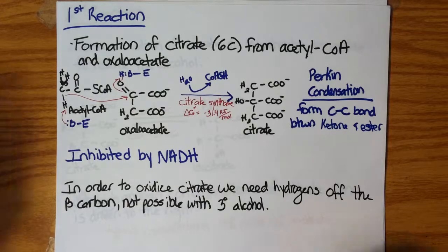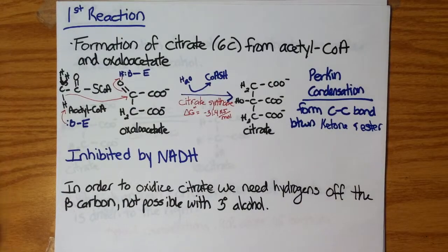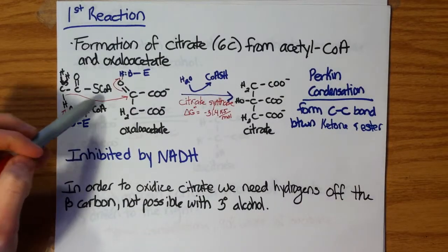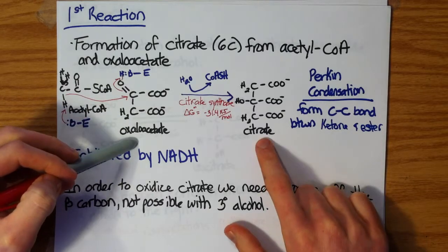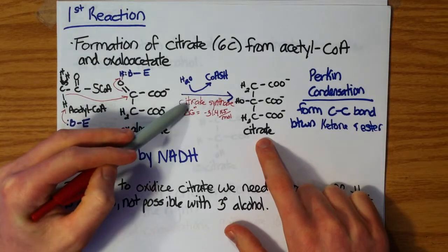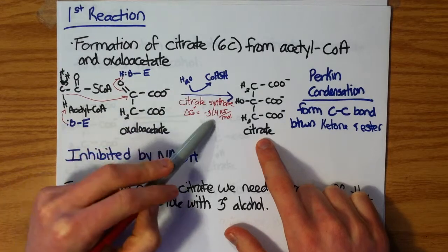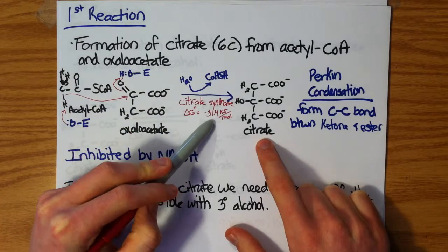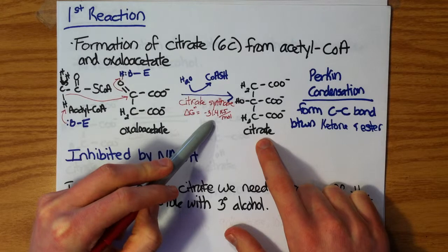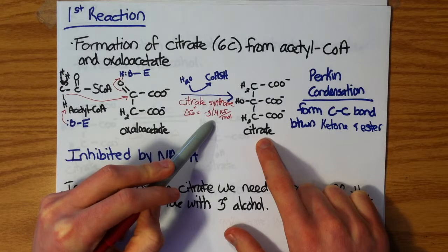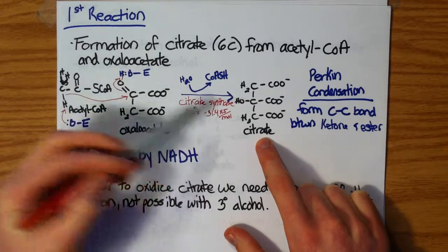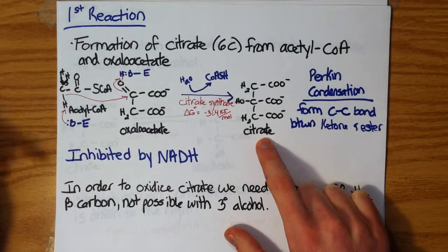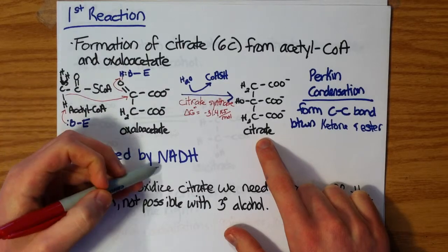So let's work through these reactions. The first reaction is we're going to take acetyl-CoA and condense it with oxaloacetate to form citrate. Citrate synthase has a highly negative ΔG°' value of -31.4. High free energy release enzymes are highly regulated, and in this case it's inhibited by the electron carrier NADH.